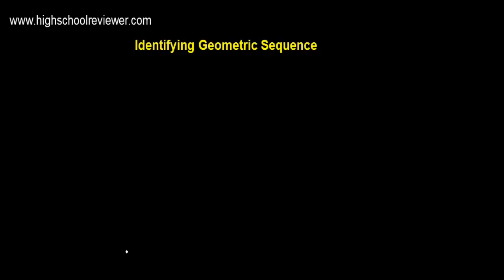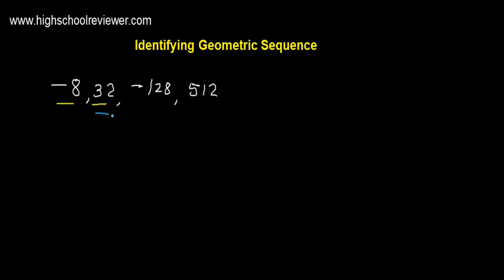Let's have another example. We have negative 8, positive 32, negative 128, and positive 512. Let's identify if this set of numbers is a geometric sequence. We have the consecutive pairs: negative 8 and positive 32, positive 32 and negative 128, and negative 128 and 512. The number on the right will be the numerator, so we have positive 32, and the denominator will be negative 8.